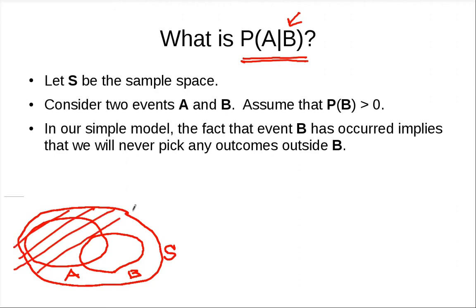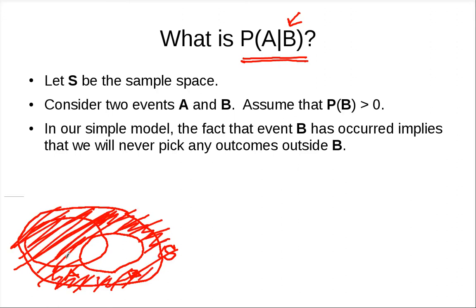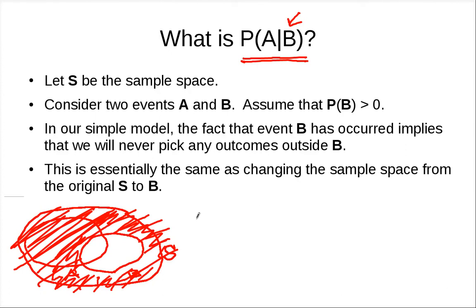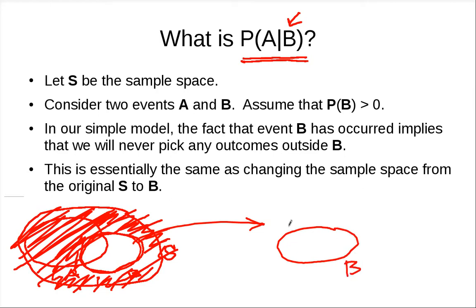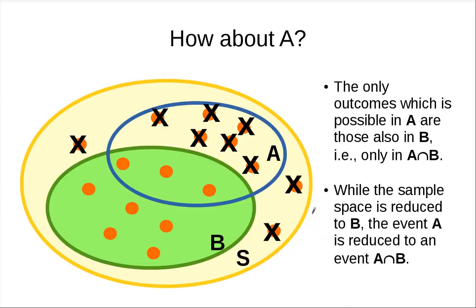It means that all the outcomes outside set B can be ignored — they are not relevant because we know that B occurs, so those outcomes cannot be the outcome of the experiment. It is like we can just focus on the outcomes inside set B, so B becomes the new sample space.